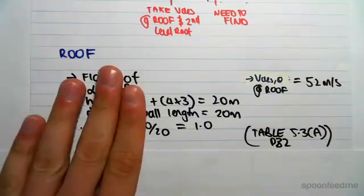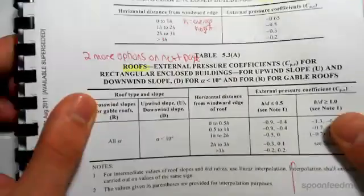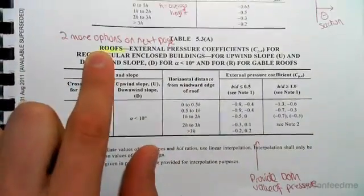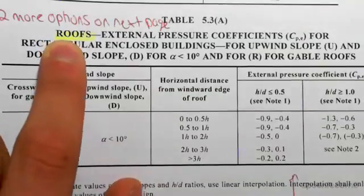So we're going to go to table 5.3a on page 32. So if I show you that table, table 5.3a, this is on page 32. This is for, let me zoom in. So this is for roofs, external pressure coefficient.